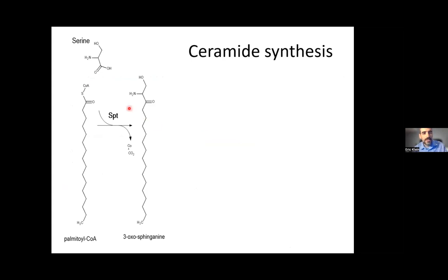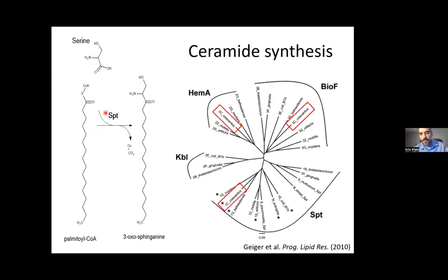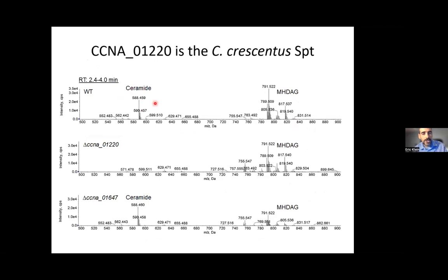Piggybacking off Dom, we know that SPT is the enzyme that carries out the first step. It turns out that Caulobacter has three enzymes that look like they could be SPT enzymes - one of which is essential, so we couldn't work on that - but for the other two we knocked them out and looked at ceramide formation by LC-MS. It turns out that gene CCNA_1220 is the Caulobacter SPT: delete this gene and the ceramide completely goes away, and we can complement it by putting the gene back in and restoring ceramide production. This is a convenient tool to study the physiology of bacterial ceramides in Caulobacter.